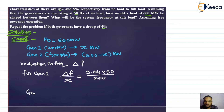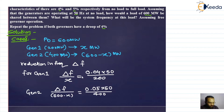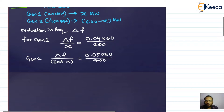Similarly, for generator two: Δf divided by (600 minus x) equals 0.05 multiplied by 50, divided by 400. Since the alternators are operating in parallel, they form a coherent group and the frequency remains the same on both. Therefore, the reduction in frequency Δf is also the same, so we can equate both expressions and solve for x.